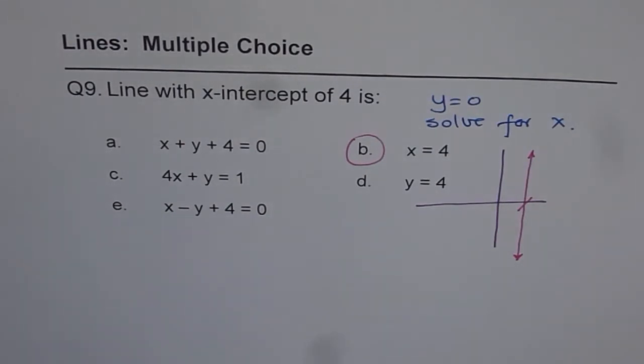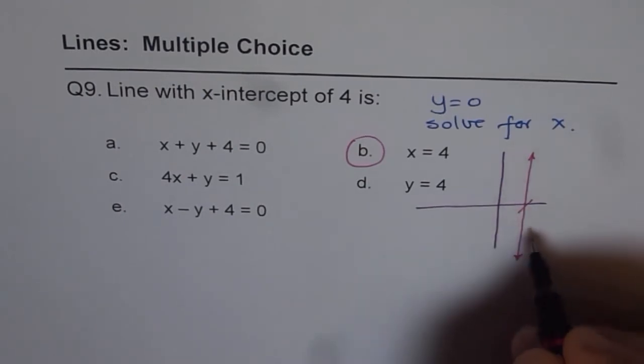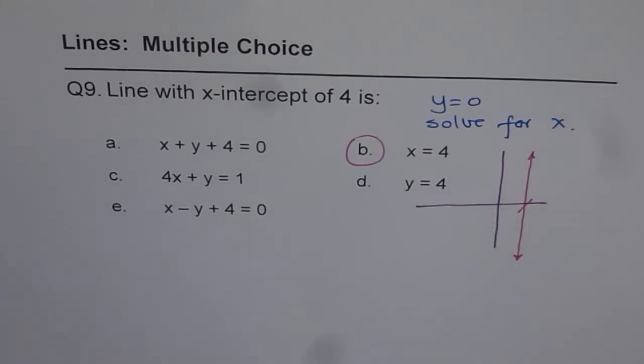So this formula of substituting y equals to 0 and solving for x doesn't really work all the time. It works in most of the standard equations. Now, this line has an undefined slope, and that's the reason why we don't have any y-factor in it. I hope you appreciate it. So there are exceptions to the rules. Thank you.